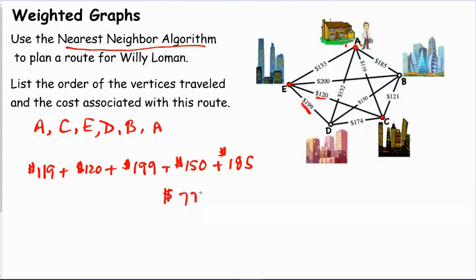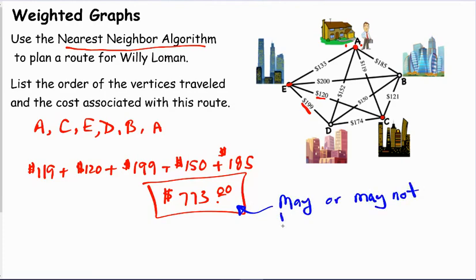And $773 is the cost of this route using the nearest neighbor algorithm. Now, again, this may or may not be the cheapest, but it definitely is not the most expensive. And the book likes to use the word optimal. Optimal is their way of saying the most efficient way to plan the route. May or may not be optimal, but it's definitely not the most expensive. So that is the end of our lecture.